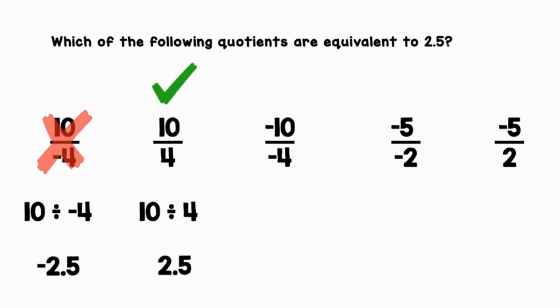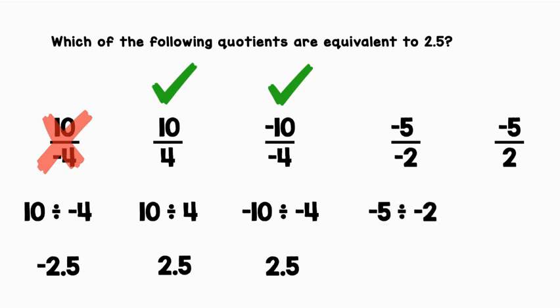Negative 10 over negative 4 can be rewritten as negative 10 divided by negative 4. A negative divided by a negative is a positive, so our answer is positive 2.5 — we can give this a check as well. Negative 5 over negative 2 can be rewritten as negative 5 divided by negative 2. A negative divided by a negative is a positive, so our answer is 2.5 — we can give this a check.